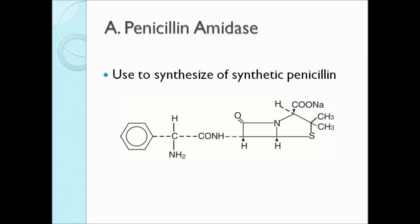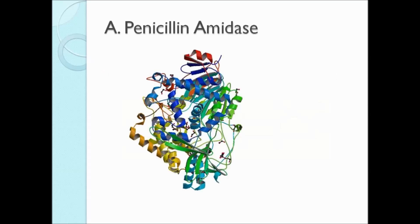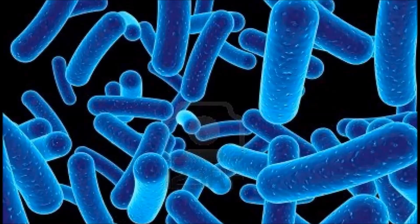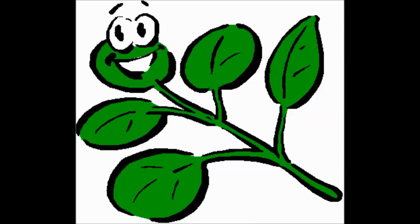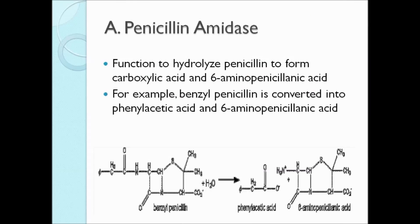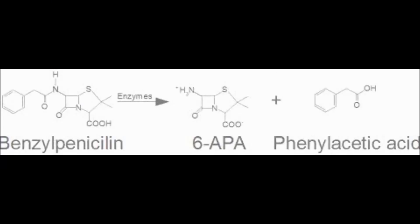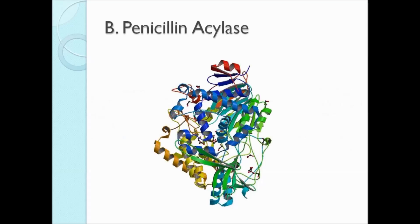An example of an enzyme involved in the synthesis of synthetic penicillin is penicillin amidase. This enzyme can be extracted from bacteria, yeast, fungi, and plants. It hydrolyzes penicillin to give carboxylic acid and 6-aminopenicillanic acid. For example, benzyl penicillin is converted into phenylacetic acid and 6-aminopenicillanic acid.